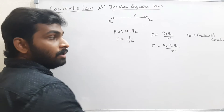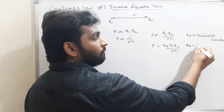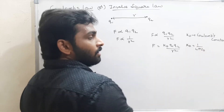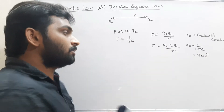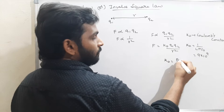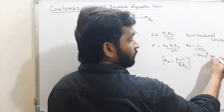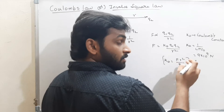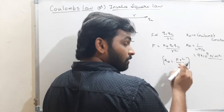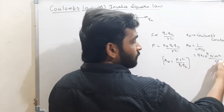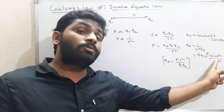What is the value of K0? The value of K0 is 1 divided by 4π ε₀, which equals 9×10⁹ Newton meter squared per Coulomb squared. We can also write K0 as F R² divided by Q1 Q2, confirming its units are N·m²/C².